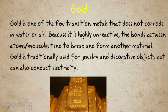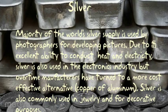Gold is one of the few transition metals that does not corrode in water or air. Because it is highly unreactive, the bonds between atoms and molecules tend not to break and form another material. Gold is traditionally used for jewelry and decorative objects, and can also conduct electricity. The majority of the world's silver supply is used by photographers for developing pictures. Due to its excellent ability to conduct heat and electricity, silver is also used in the electronics industry, but over time manufacturers have turned to more cost-effective alternatives such as copper or aluminum. Silver is also commonly used in jewelry and for decorative purposes.